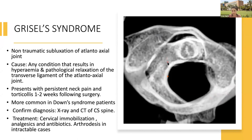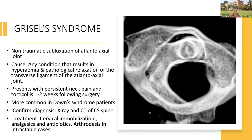We should be familiar with Grisel syndrome, which is reported in 78% of cases in association with adenotonsillectomy surgery. It is a non-traumatic subluxation of the atlanto-axial joint — the child presents with non-traumatic torticollis due to rotational instability of the atlas over the axis, caused by pathological relaxation of the transverse ligament of the atlanto-axial joint. It presents with torticollis and neck pain, and is more common in Down syndrome patients. Diagnosis is by X-ray and CT spine; treatment is cervical immobilization, antibiotics, and analgesics. We must be very careful when giving neck extension to Down syndrome patients.